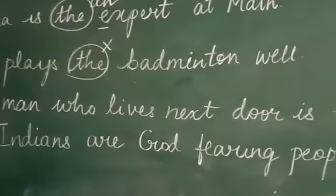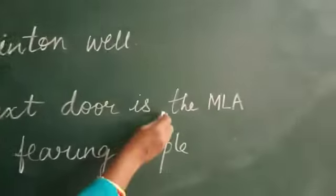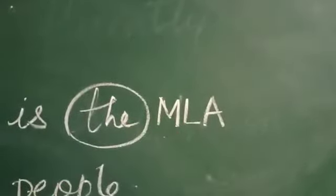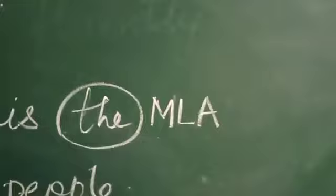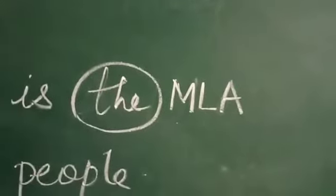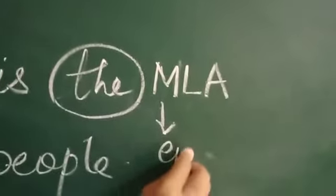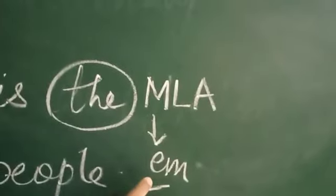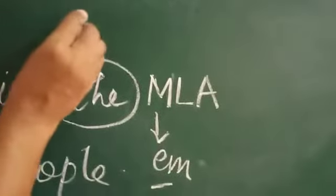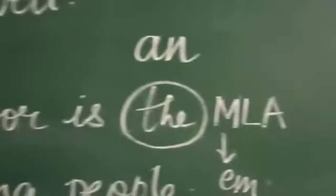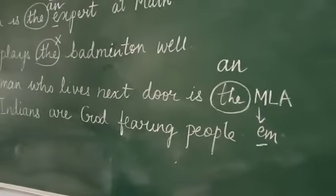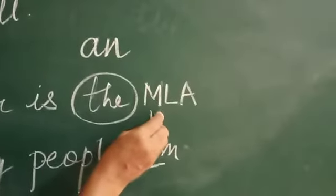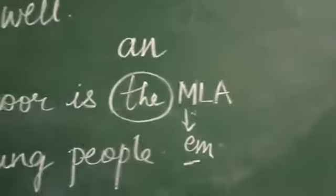Next: 'The man who lives next door is the M.L.A.' Here we identified the wrong article. You saw 'M', thought it was a consonant, and wrote 'the' — but 'the' is wrong. You might then write 'a', but no. 'M.L.A.' has an 'em' sound — that is a vowel sound — so it takes 'an'. The correct sentence is: 'The man who lives next door is an M.L.A.' Whenever there are abbreviations like this, please check carefully and then place the article.